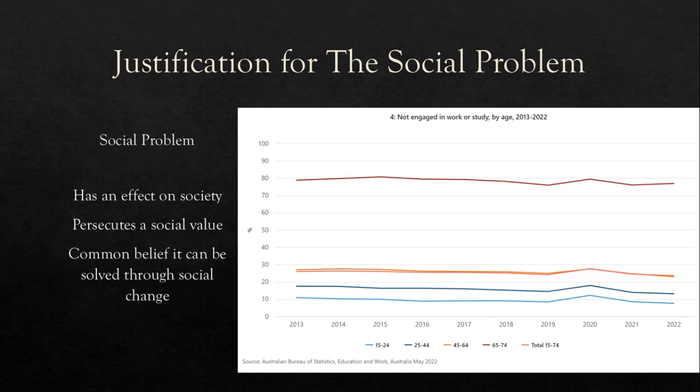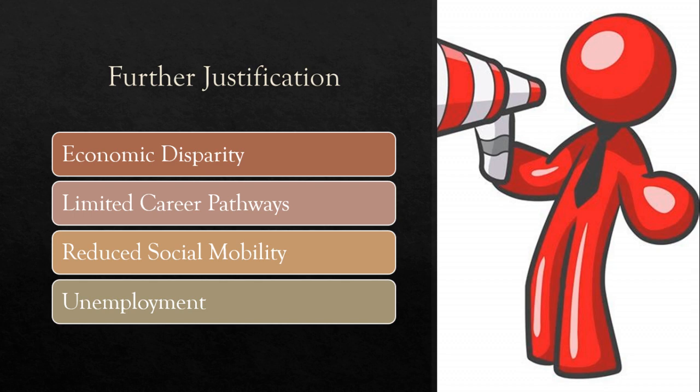This is in stark contrast to 3% of Catholic and 1% of independent schools within this category. As part of the Closing the Gap framework, the National Indigenous Australians Agency reported that in 2016, 65% of Indigenous Australians aged 20 to 24 had achieved Year 12 attainment or equivalent, compared to 89% in non-Indigenous Australians. The OECD notes that educational inequality is linked to issues of limited career opportunities, economic disparity, reduced social mobility, and unemployment, along with many other things.